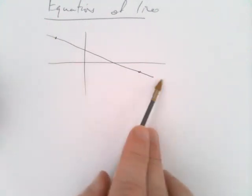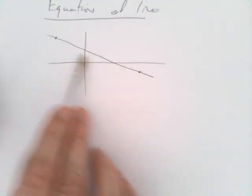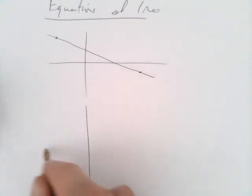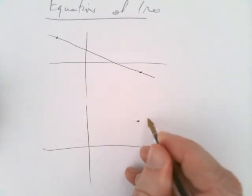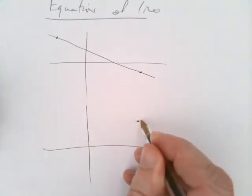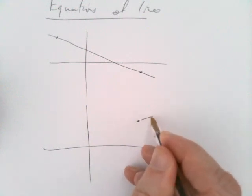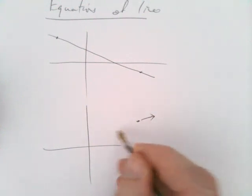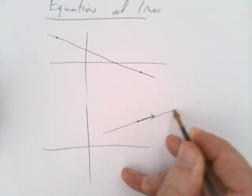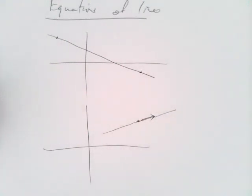If you put a point there and a point there, you can just draw the line between them. Similarly, if you specify a point and a steepness or slope of the line that you want to have, then there's going to be one line that has that slope.